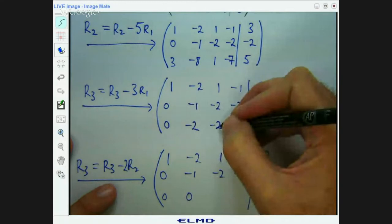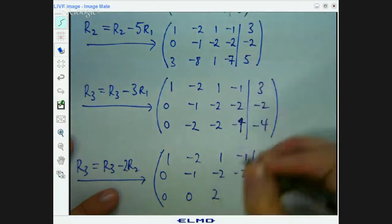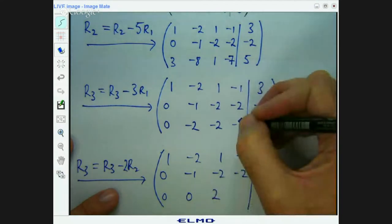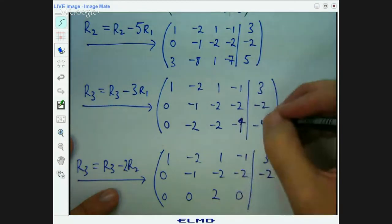Negative 2 minus 2 times negative 2. So that's negative 2 plus 4, which is 2. Negative 4 minus 2 times negative 2. That's negative 4 plus 4, 0. And same over here.